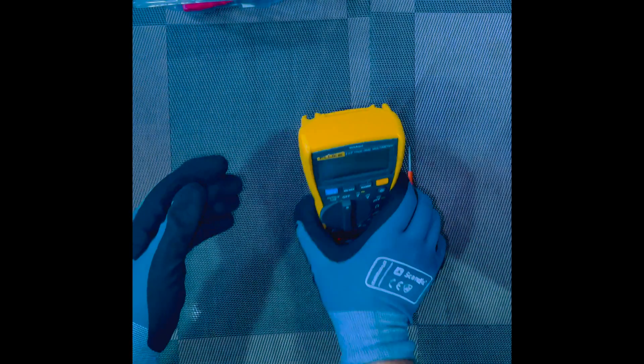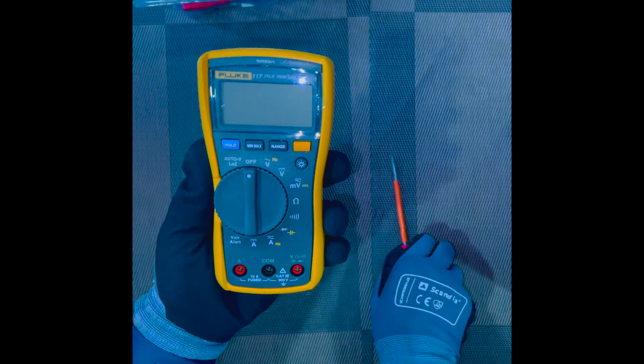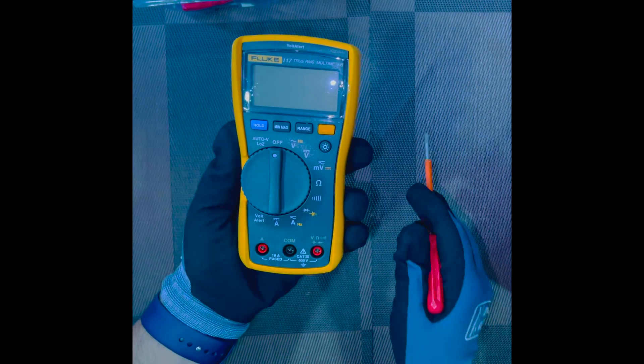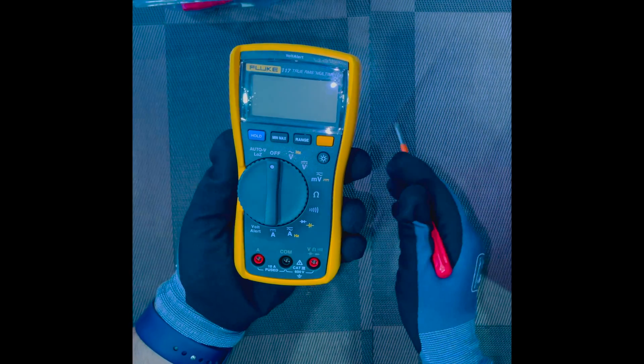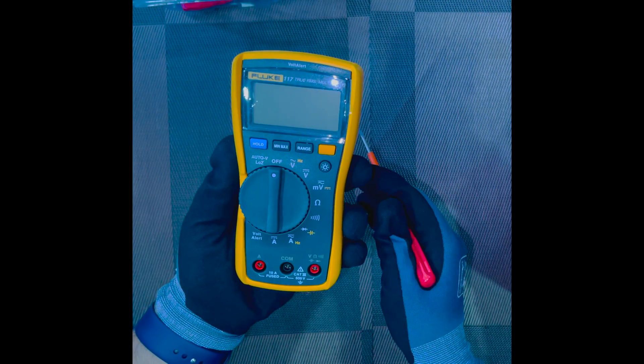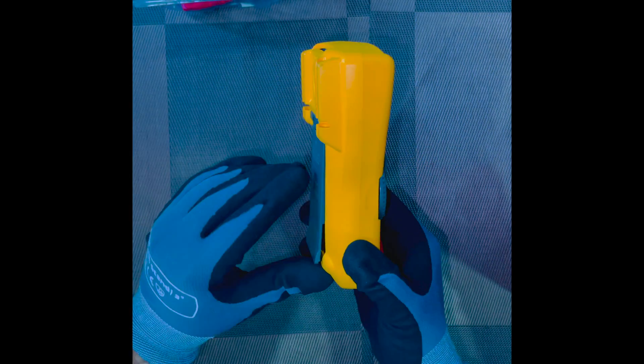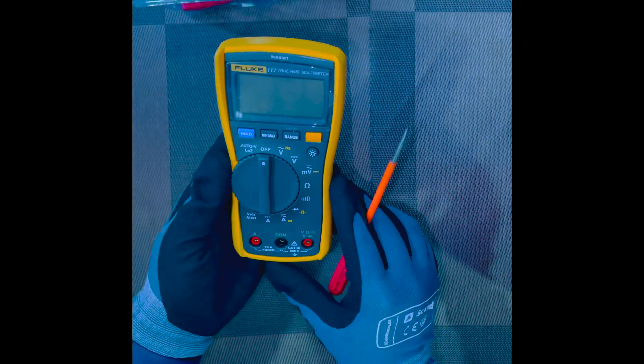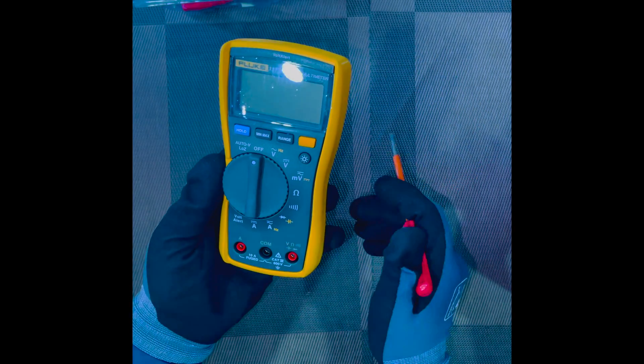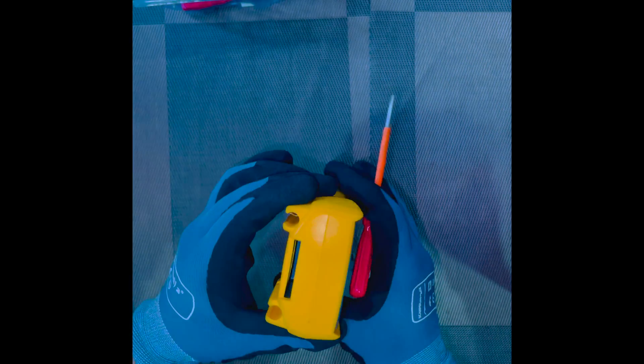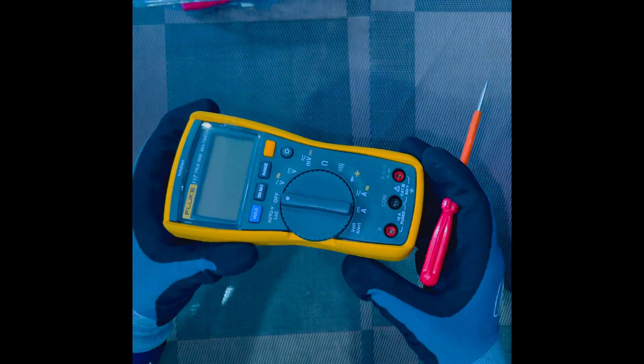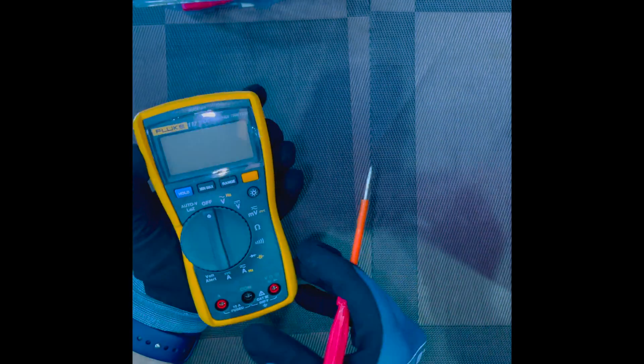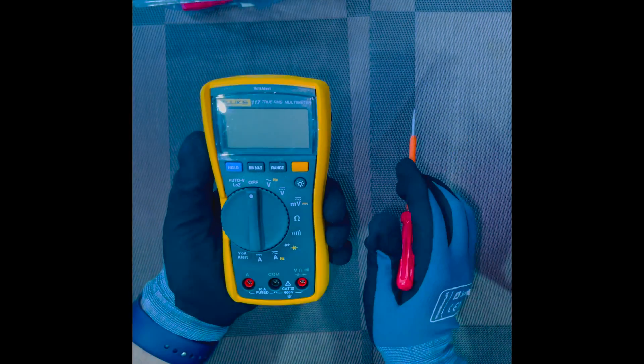In order to do the calibration part, the testing part, the fault finding part on the electronic loops and currents, and to understand exactly what is happening within these loops and be a competent marine engineer, it's very important to have good knowledge on how the multimeter works to measure current, voltage, resistance within these circuits.